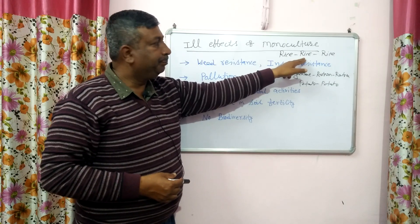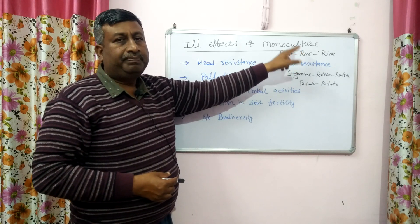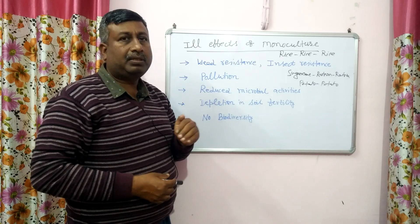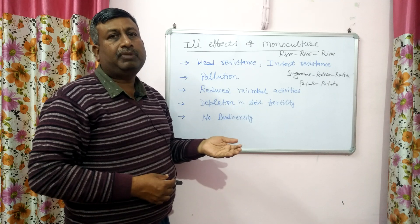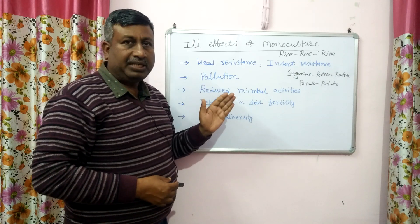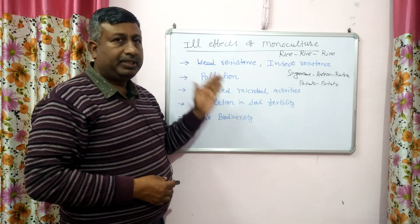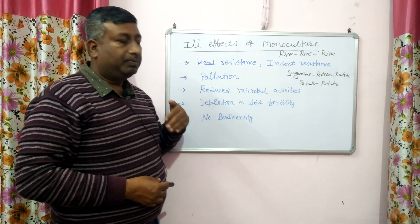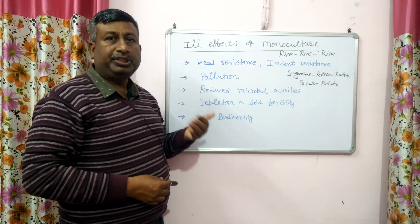Suppose it is rice and chickpea — then it is not monoculture, because cultivation practices of rice are entirely different from chickpea. So monoculture is a specialized system and skilled labor is required. In many places — South India: rice grows continuously; Western India: continuous sugarcane crop; Hill area: continuous potato grows.